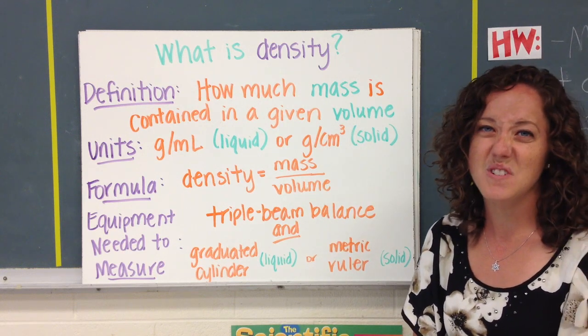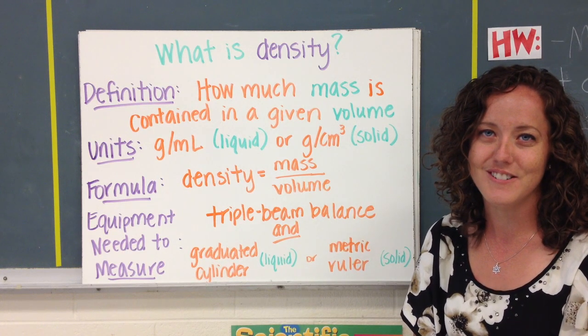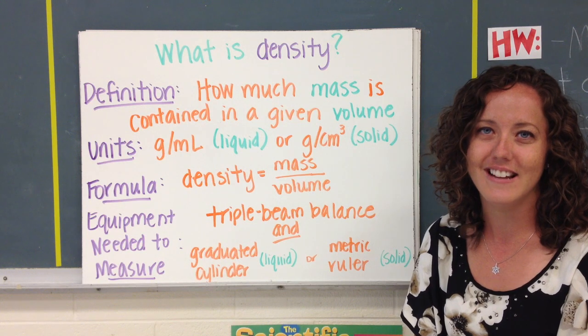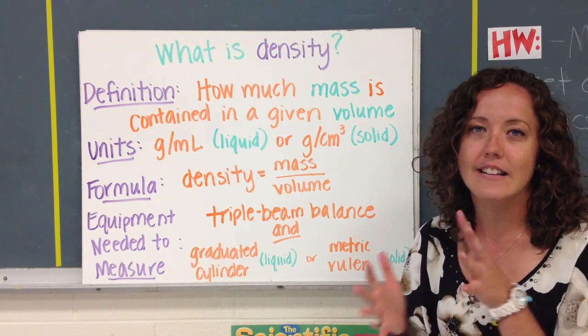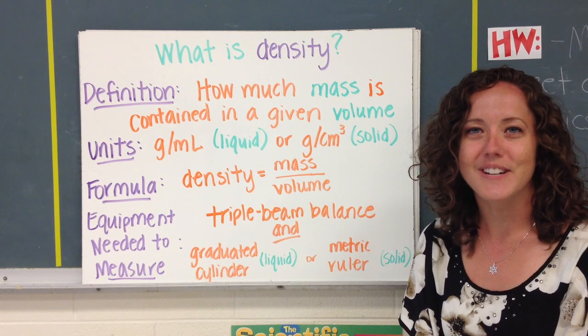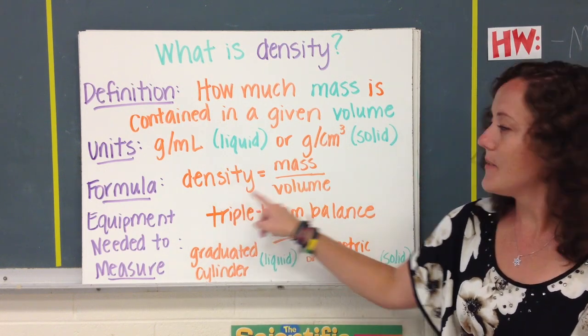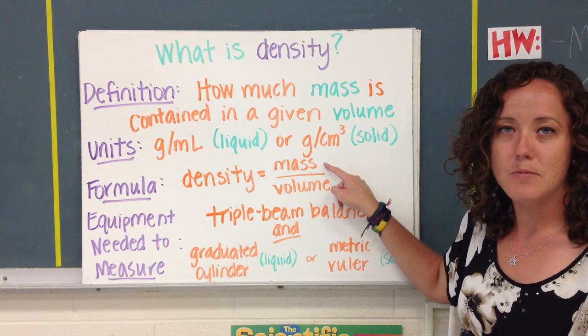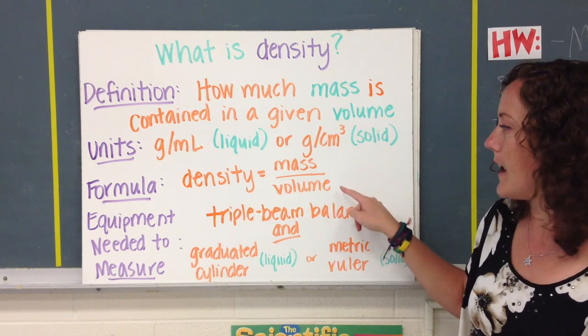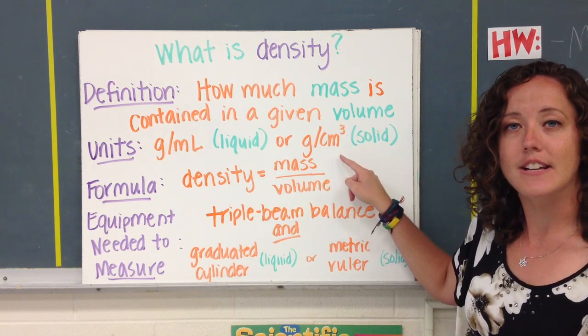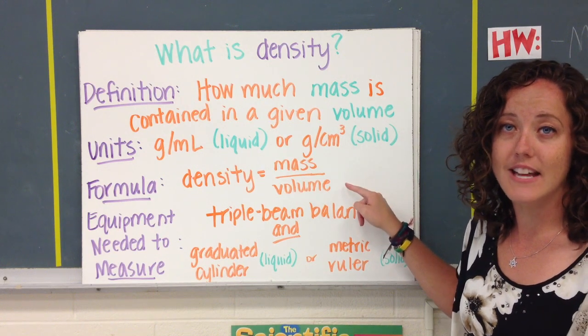So the formula that we use, we actually have to do some math, and I know some of y'all don't understand why we do math in science, but they are related. They go hand in hand, so we just have to get used to it. The formula we use in order to calculate density, we have to take the mass of the object and divide that by the volume. So how much matter it is divided by how much space it takes up.